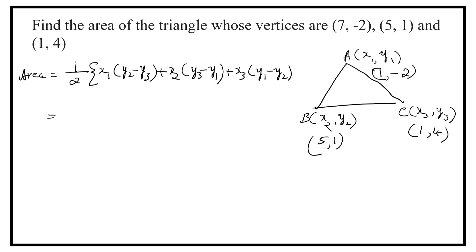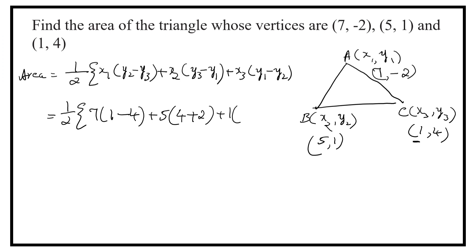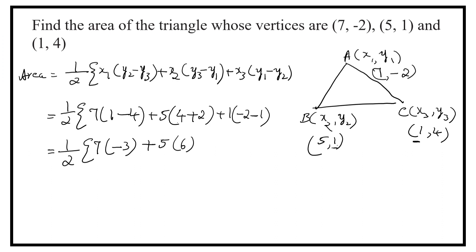Now let us substitute the values: half into 7(1 minus 4) plus 5(4 minus minus 2, that is plus 2) plus 1(minus 2 minus 1). That is equal to half into 7(1 minus 4, that is minus 3) plus 5(4 plus 2, that is 6) plus 1(minus 2 minus 1, that is minus 3).